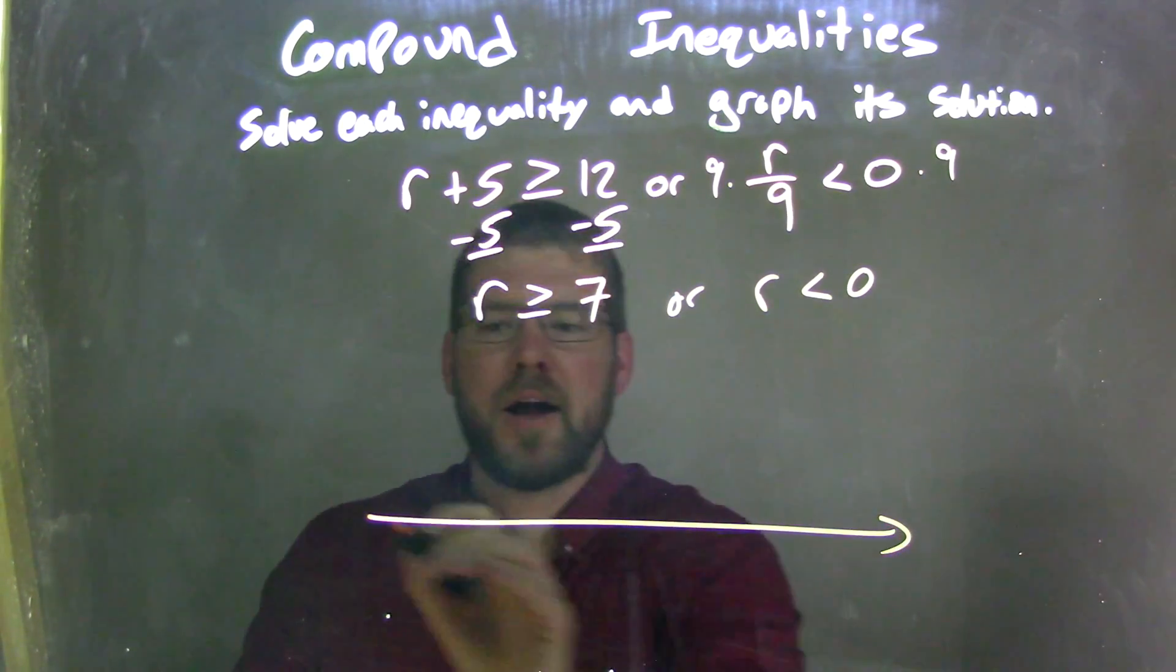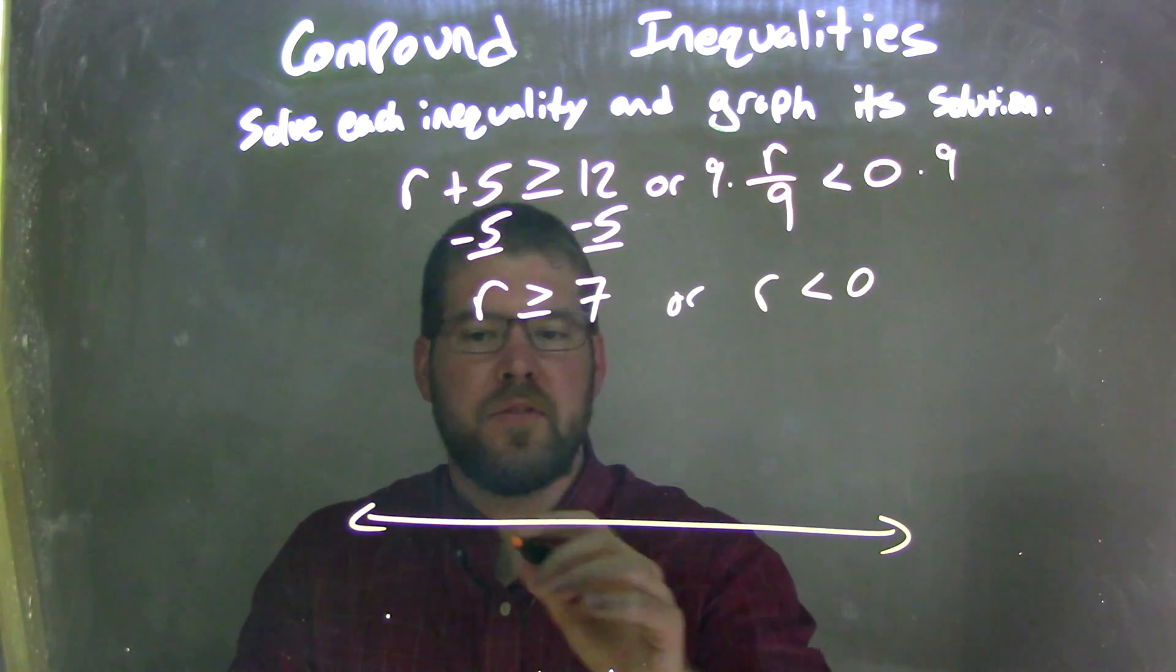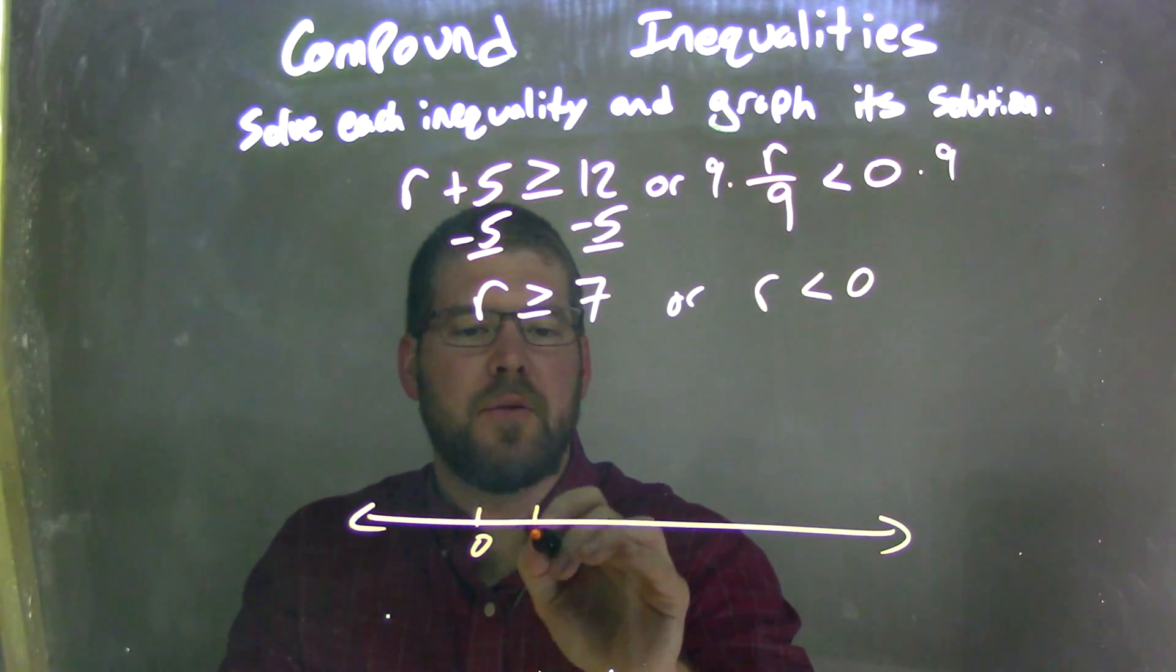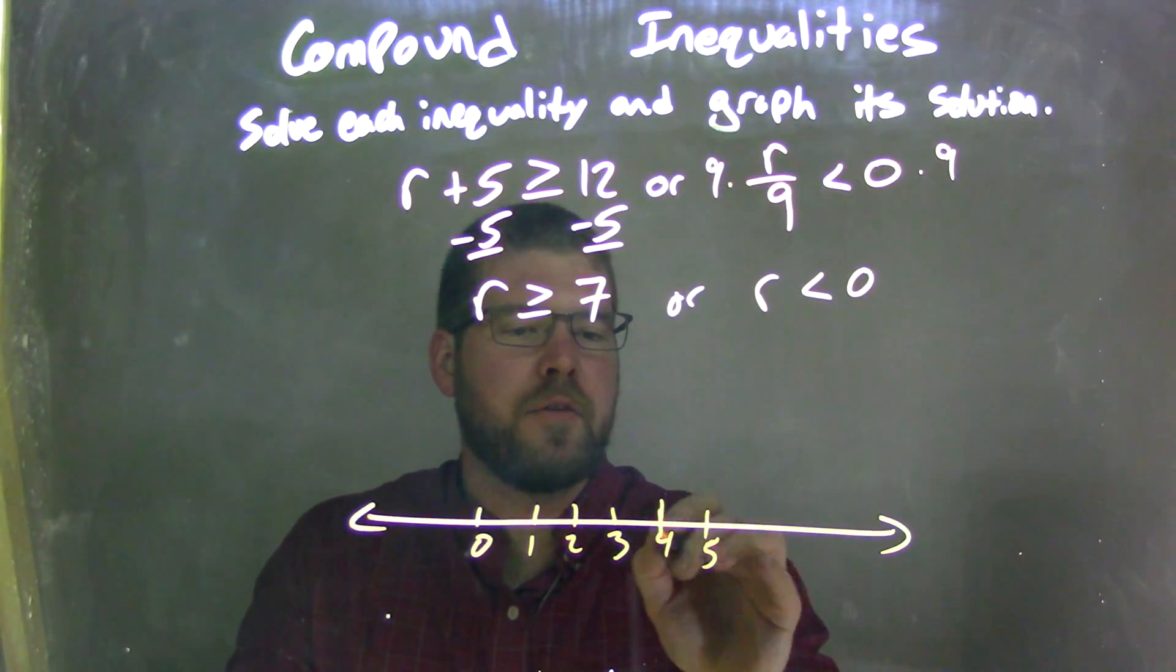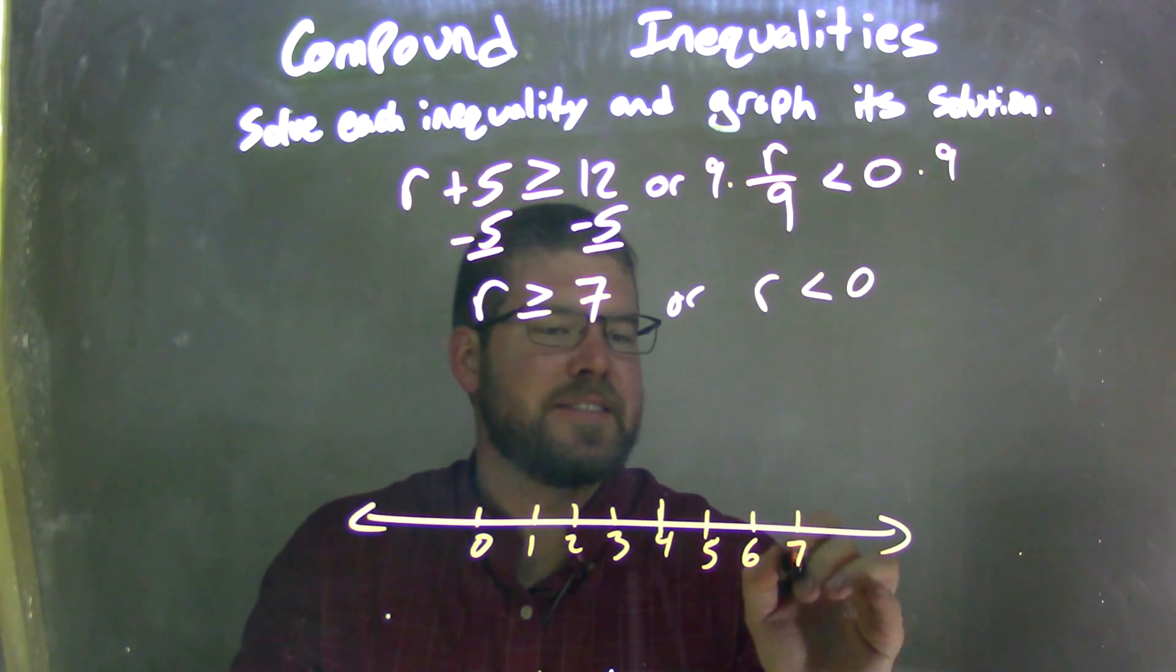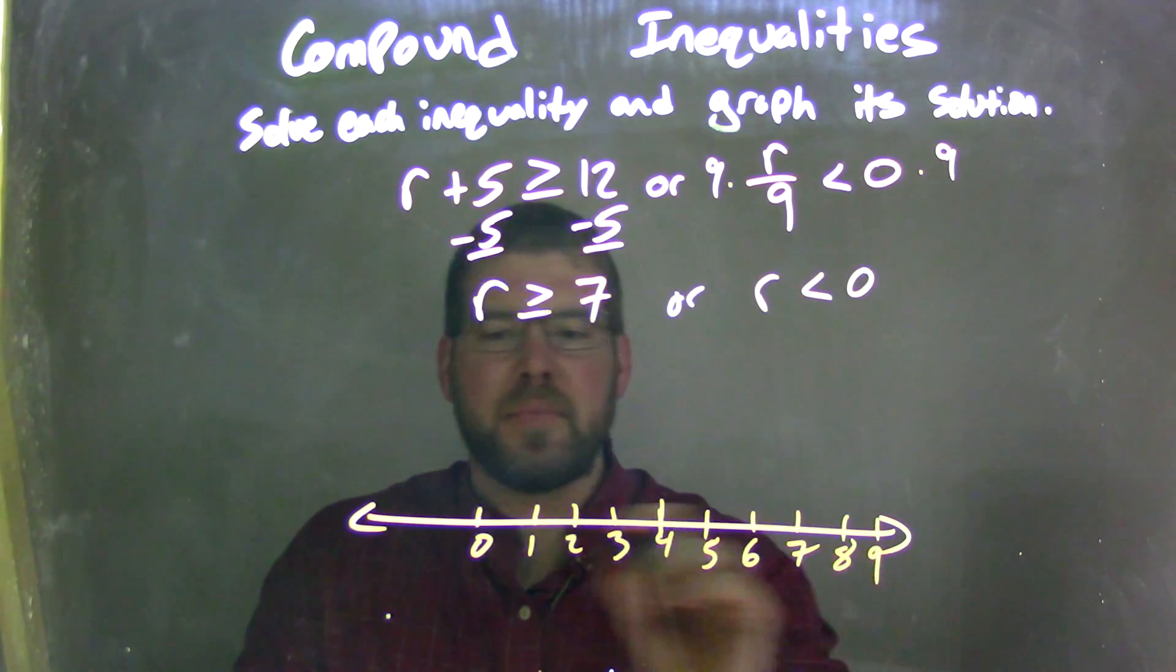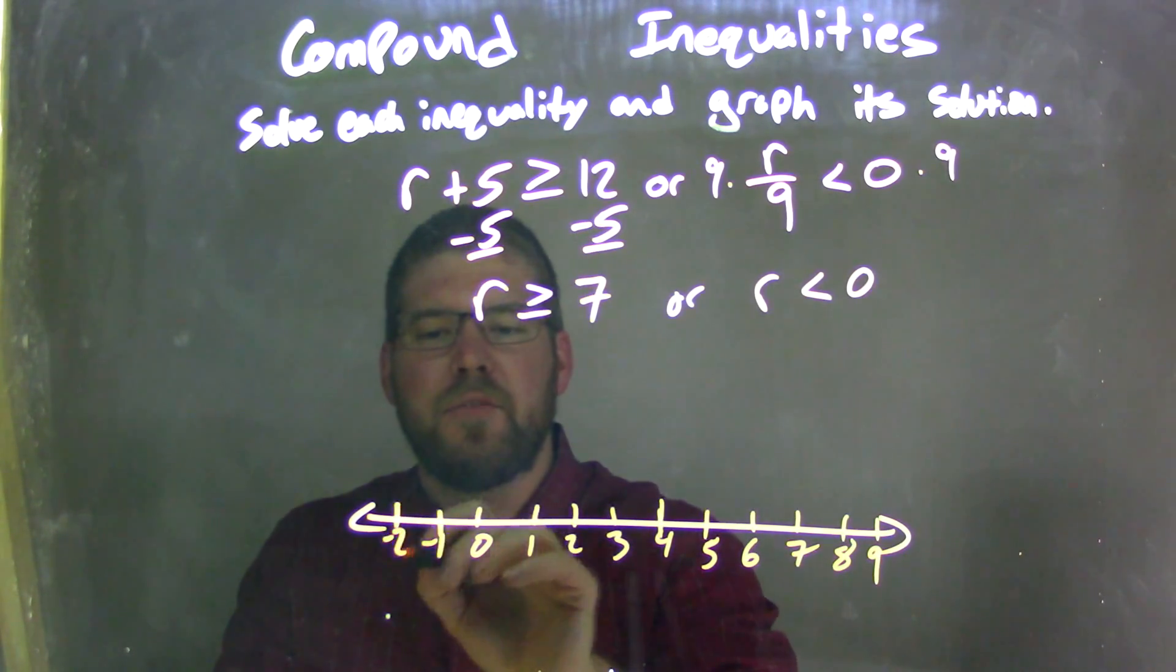So when I make my number line here, I'm going to make sure I encompass both those numbers, 0 and 7. So let's put the 0 here, 1, 2, 3, 4, 5, 6, 7, 8, 9, and negative 1 and negative 2.